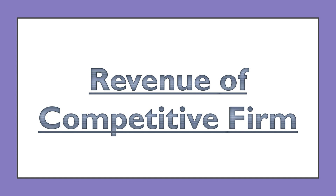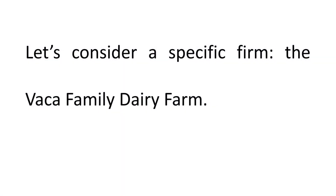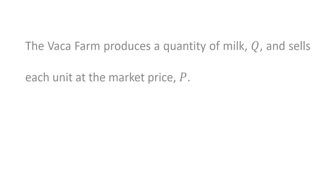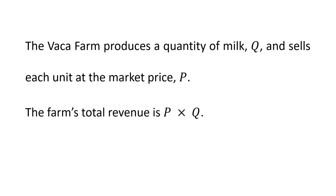Hello students, today's topic is revenue of a competitive firm. Let's consider a specific firm — in our case it is Vekka Family Dairy Firm. The Vekka firm produces a quantity of milk Q and sells each unit at the market price P. Thus, the firm's total revenue is P times Q.